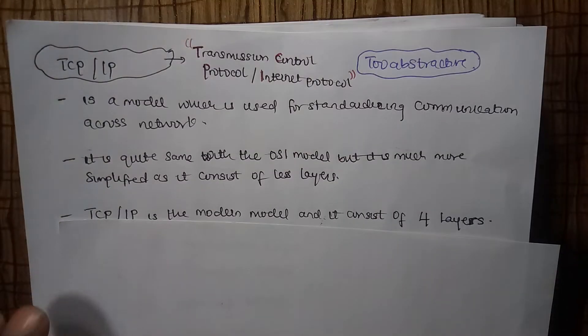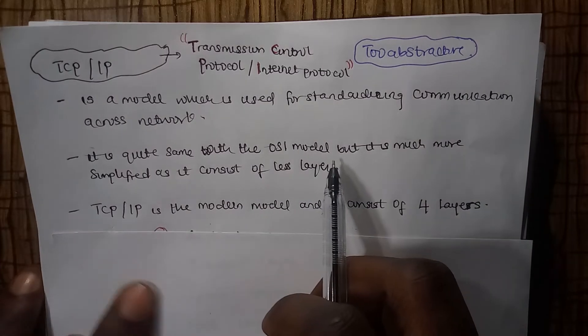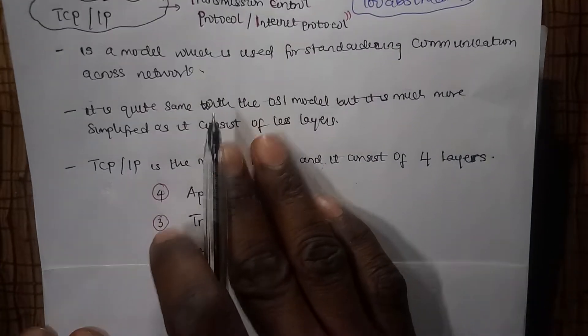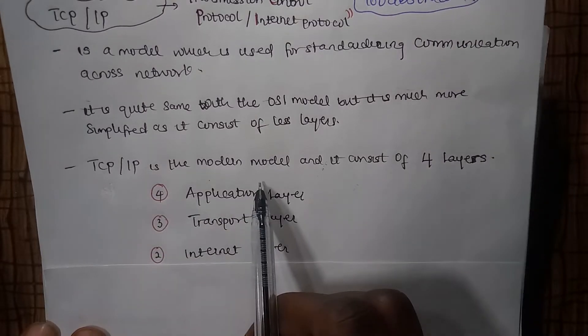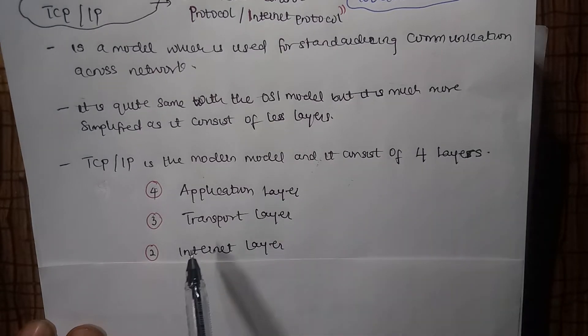The TCP/IP is quite similar to the OSI model but it is much more simplified as it consists of less layers. TCP/IP is the modern model and it consists of four layers.